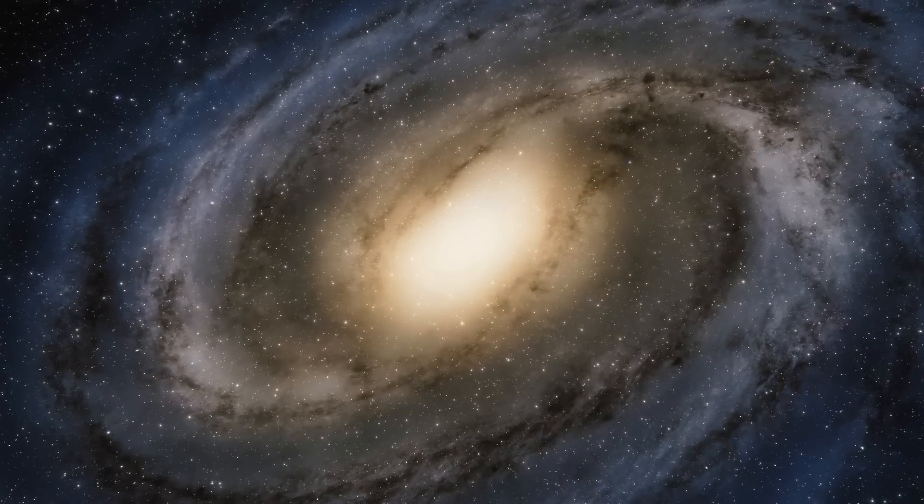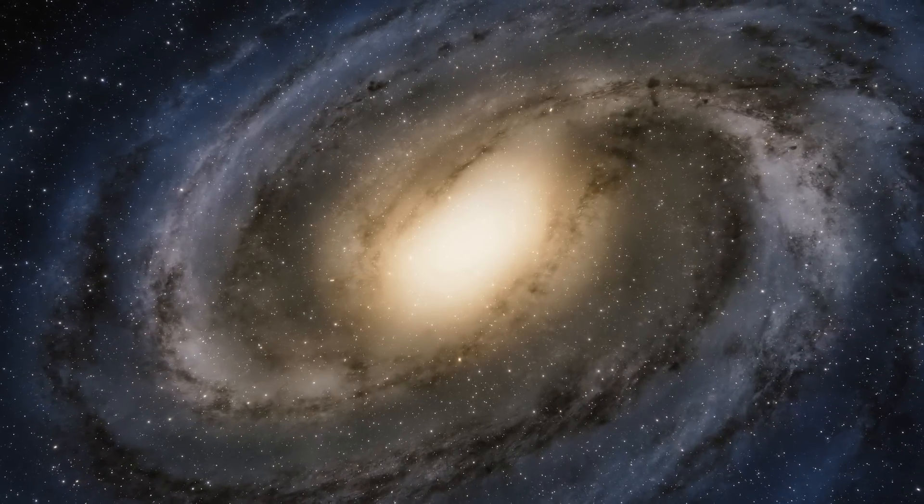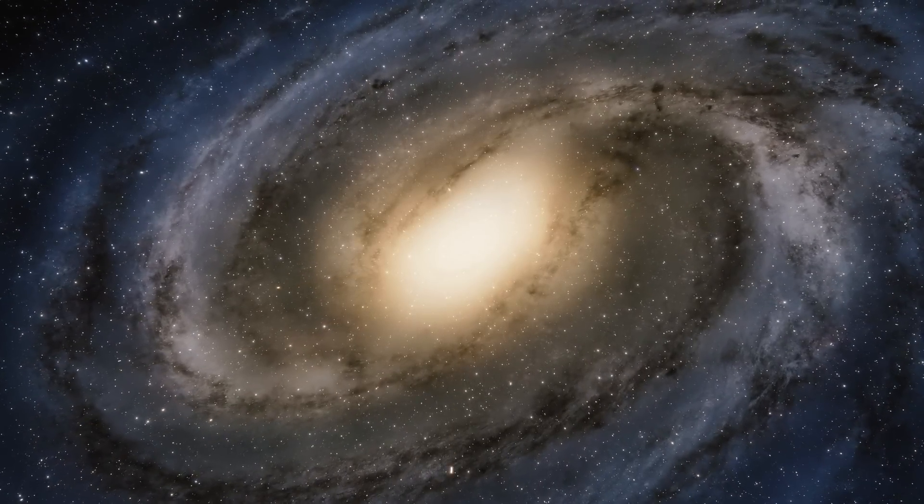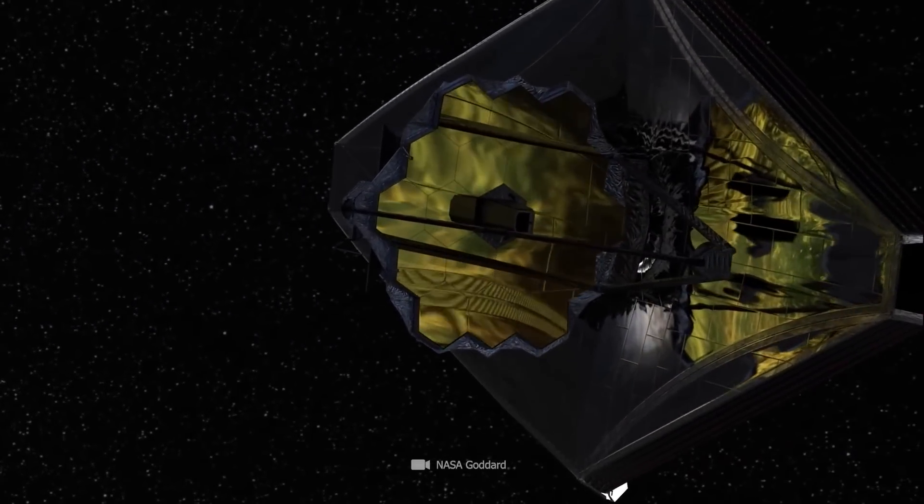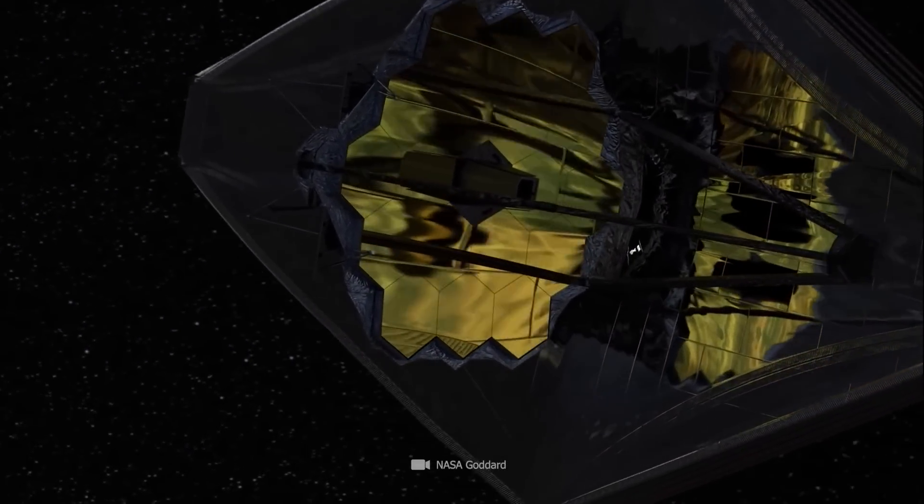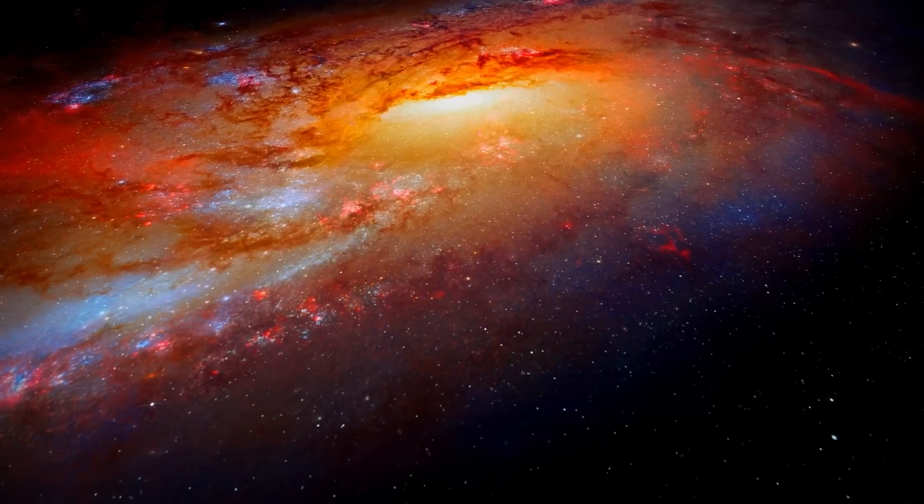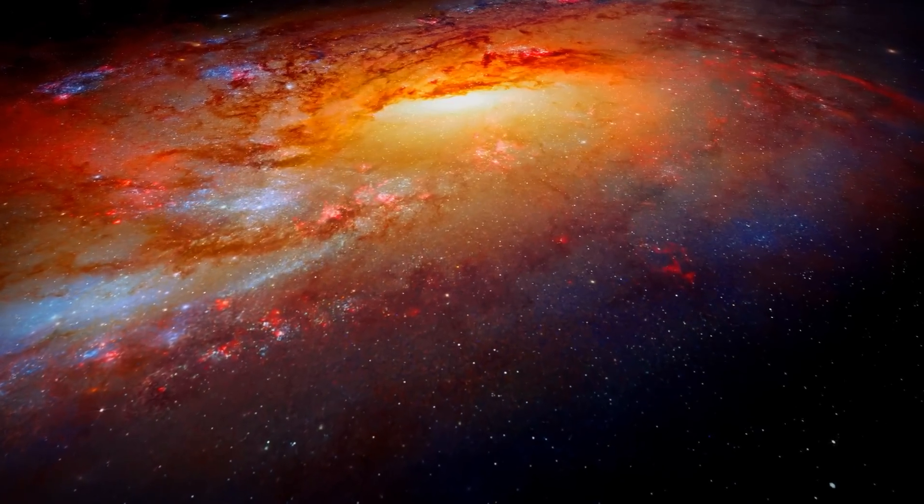It takes many billions of years to form a galaxy like our Milky Way with 100 billion stars. But the James Webb Telescope has found six galaxies that existed 500 million years after the Big Bang, and they are up to 10 times bigger than our Milky Way. That shouldn't exist!